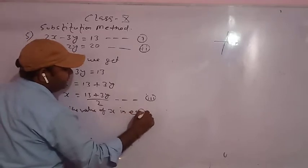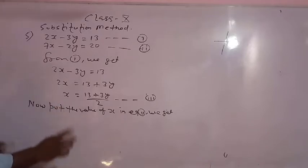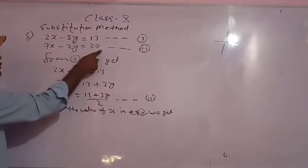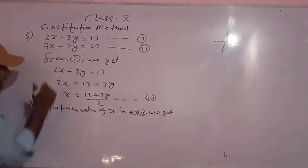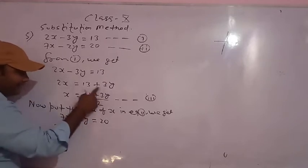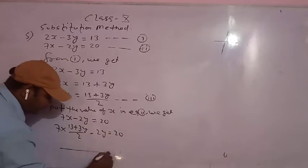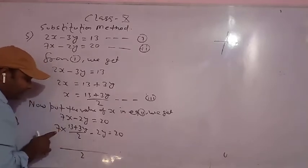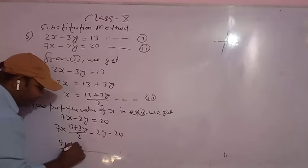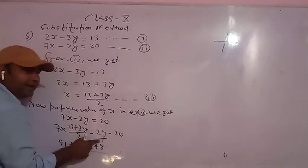Now put the value of x in equation second. Many times I have told you: get from first and put in the second. If you put back in the first, that will be wrong — you must put in equation number 2. The second equation is 7x minus 2y equals 20, and the value of x is 13 plus 3y by 2. Here we take LCM 2, and 7 will multiply with both terms: 7 times 13 is 91 and 7 times 3 is 21.